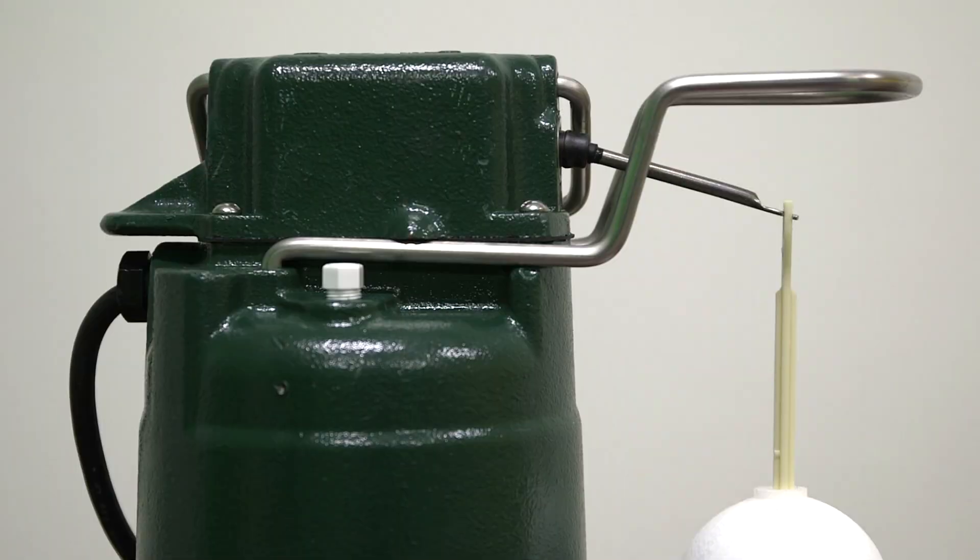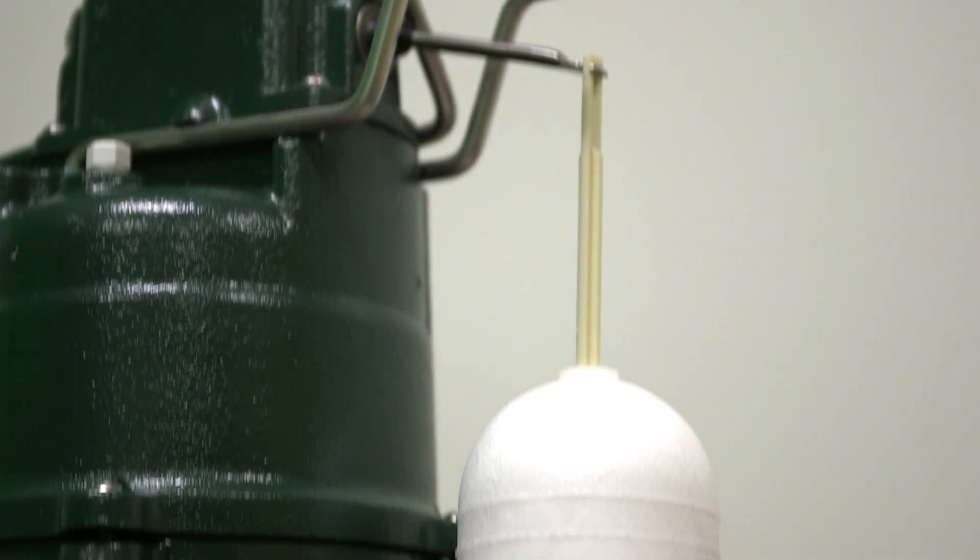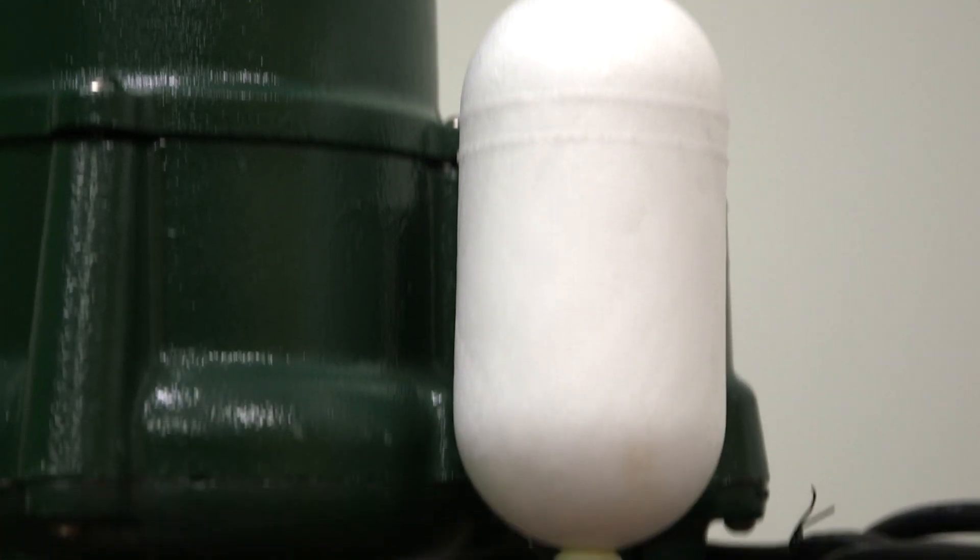This model includes a float operated two pole mechanical switch, a stainless steel float guard switch arm and a solid buoyant polypropylene float which prevents water from filling the float and causing malfunction.